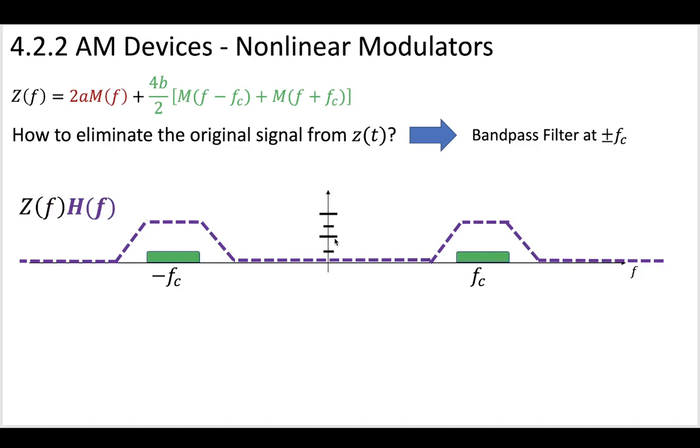We pass our ZF right through this transfer function that's a bandpass filter, and that will give us a modulated message. All that's going to be left is our message that's been modulated. Our original message has been moved out to the carrier frequency, plus and minus fc.